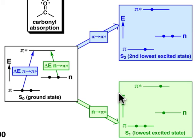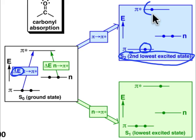If the energy of light happens to be a little bit larger, it'll match the gap between the π level and the π* level, creating what's known as the S2, or the second lowest excited state of the carbonyl group, where there's a singly occupied π level and a singly occupied π* level.